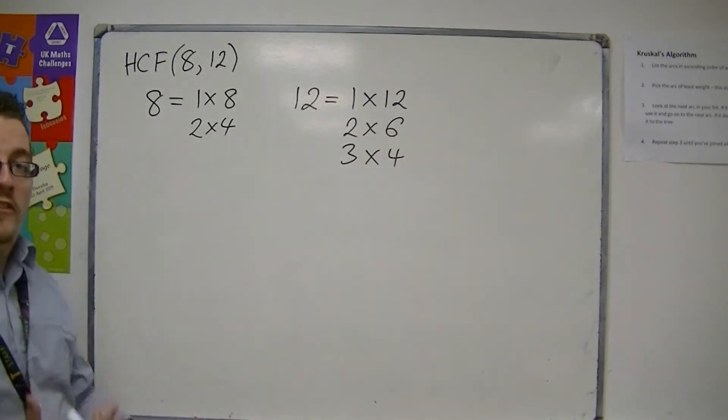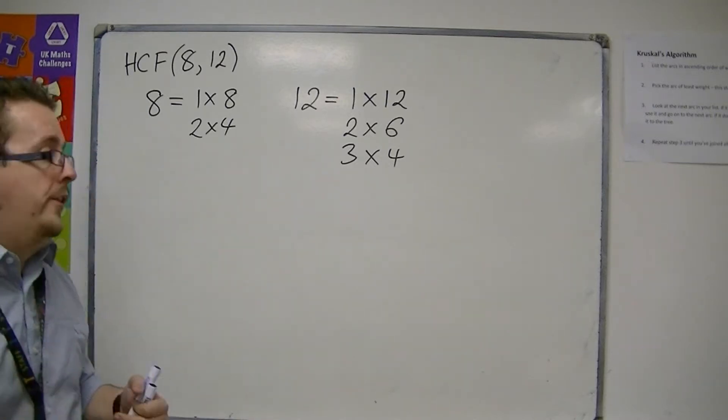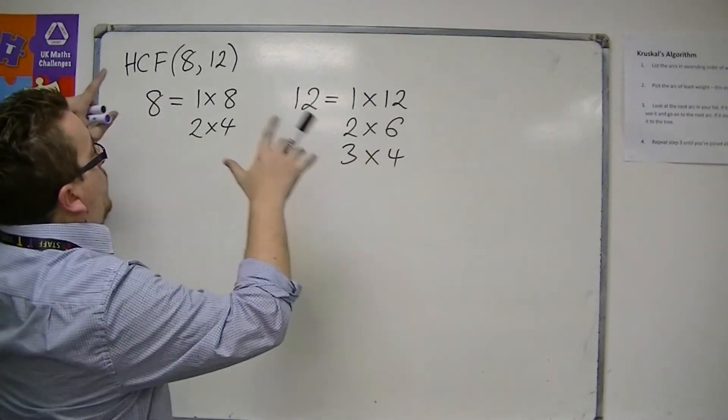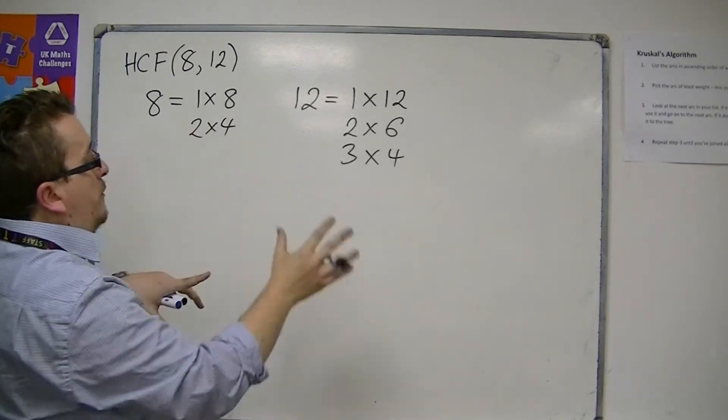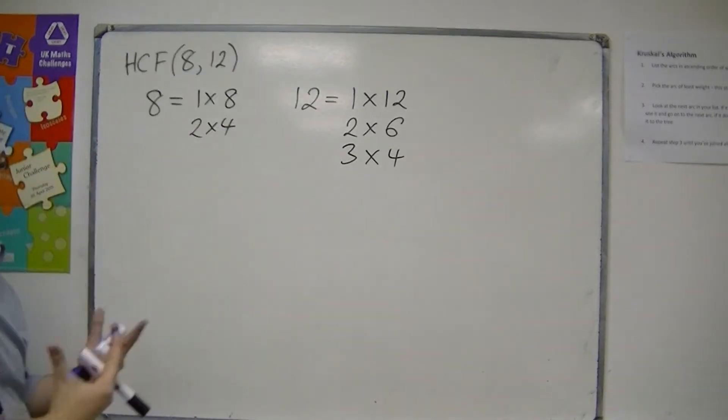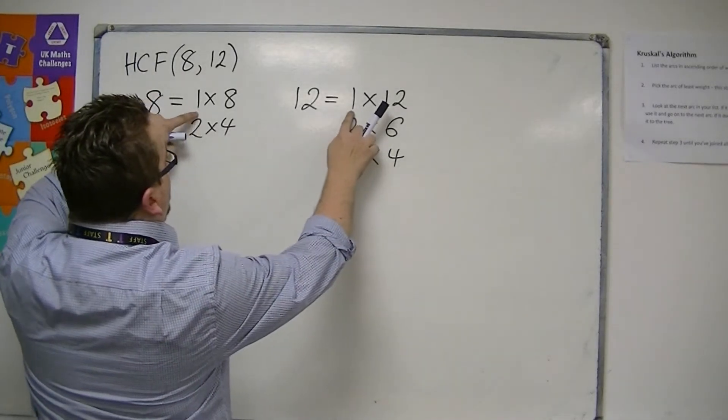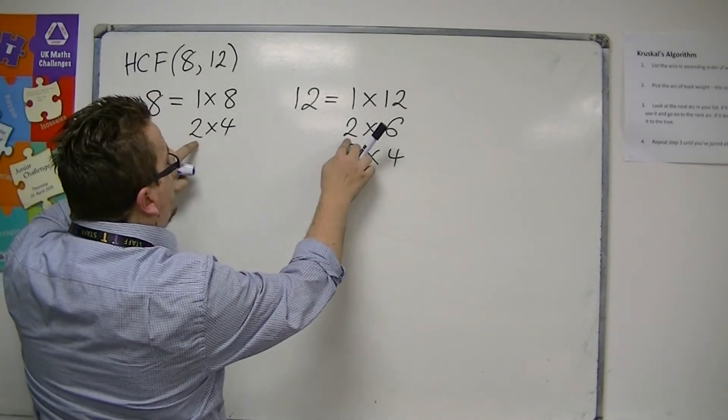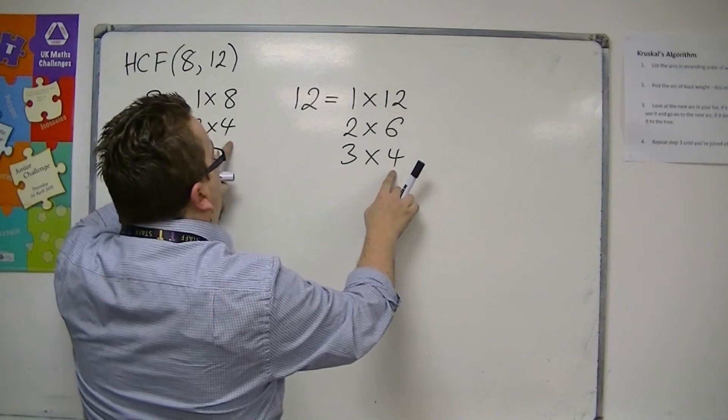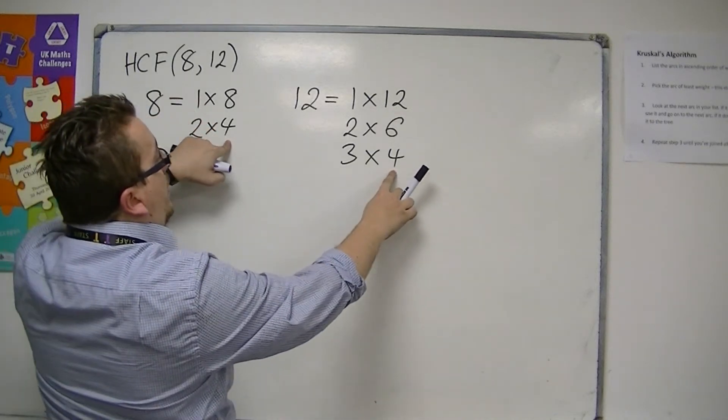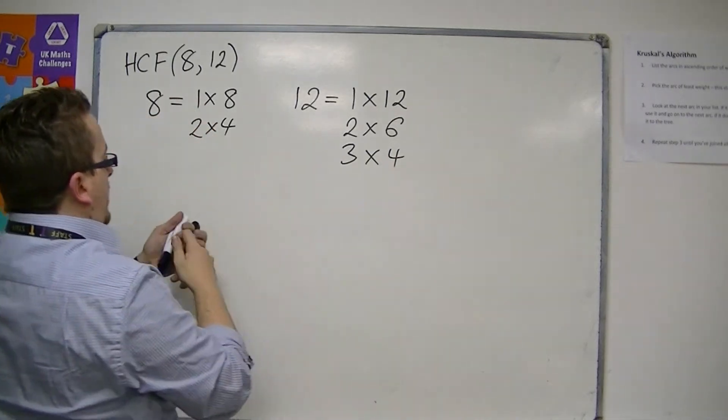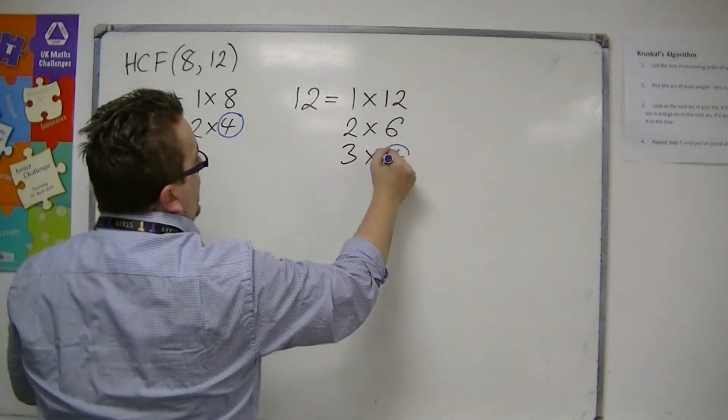Highest common factor: what we want are the factors of these two numbers that are common to both, and we want the highest one, the largest. 1 is in both lists, and so is 2. But 4 is also in both lists, and that is the largest that is in both. So 4 is the highest common factor.